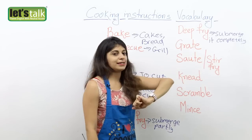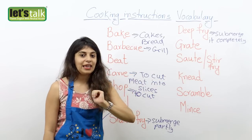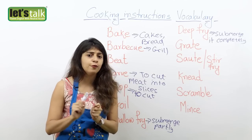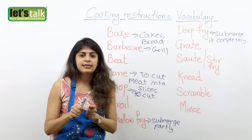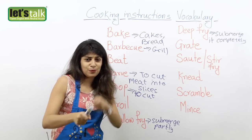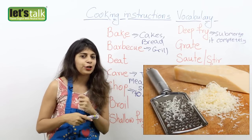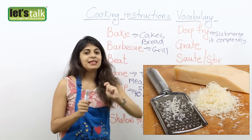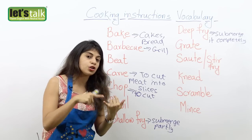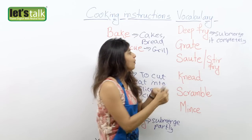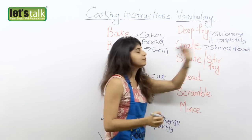Now the next one is grate. Grated cheese — I totally love it. Grate means to shred food items, probably cheese or even chicken. You shred it with the help of a grater. Maybe you can have a look at the picture here. So grate means to shred food with a shredder or grater — it's either called a shredder or a grater.